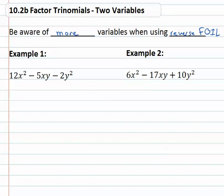For example, if we had 12x² minus 5xy minus 2y², we can go through the exact same steps trying to find the binomials that were multiplied together to give us the trinomial. We know that first times first must equal the first term. How do we multiply to 12x²? Well there are several ways, so we'll just guess one — 12x² might be 4x times 3x.